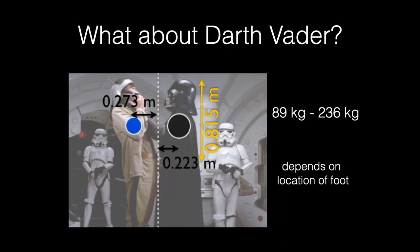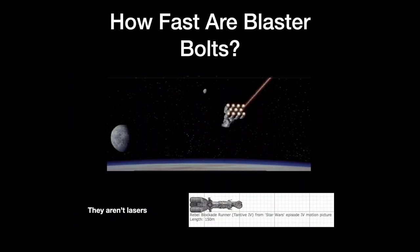Here's another center of mass example: Darth Vader lifts a rebel and holds him up. The center of mass of the Darth Vader-rebel system has to be over the pivot point. Depending on where his feet are, the closer the pivot to Vader, the heavier Vader would need to be. Based on Vader's height I estimated his mass at between 89 kilograms — a normal human — and 236 kilograms, which makes sense given all the metal prosthetics he has.